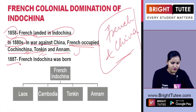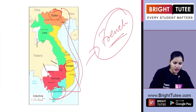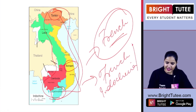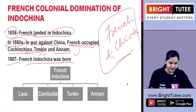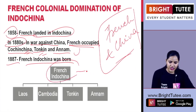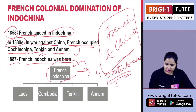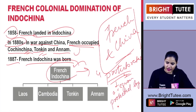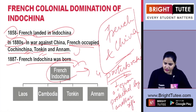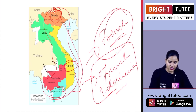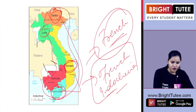In 1887, French Indochina was born. Combining all these regions, the French were finally successful in establishing French Indochina. During this period there were four protectorates — a term meaning a region protected by another. The four protectorates of French Indochina were Laos, Cambodia, Tonkin, and Annam.